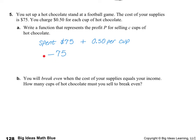Now we're going to add to that $0.50 per cup. They want the cups to be a C, and they want P to be profit. So what I'm going to do is take P and equal it to that. And that is my answer for the function.